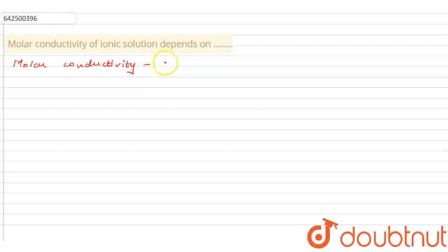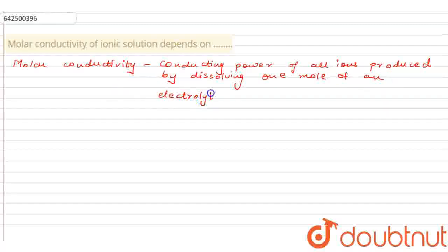So molar conductivity is simply the conducting power of all the ions produced by dissolving one mole of an electrolyte in solution. So it's simply the conducting power.